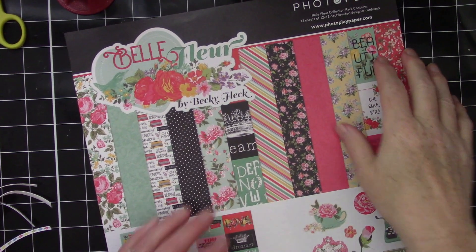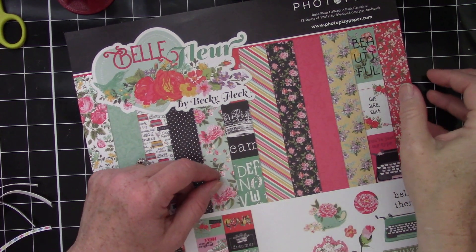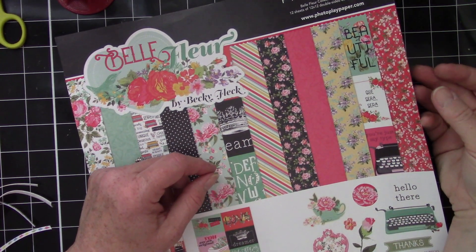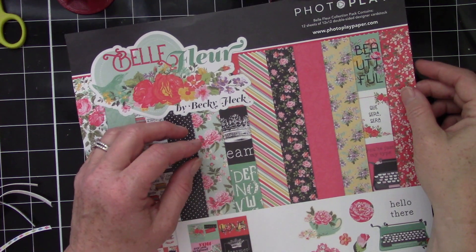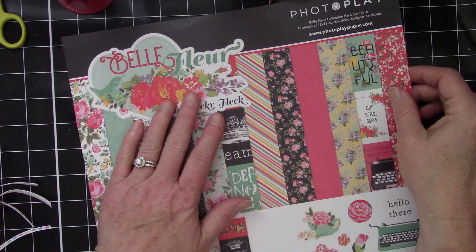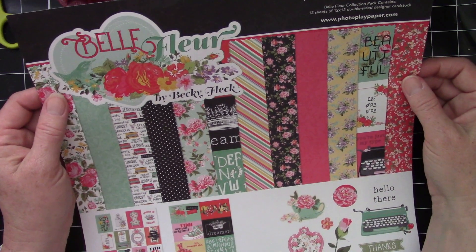Hey everyone, welcome back to my channel East Bay Stamp Chick, this is Michelle and today I have a project share and a quick tutorial at the end to show you how to make these. I used the Belle Fleur photo play paper collection by Becky Fleck.